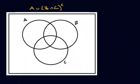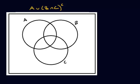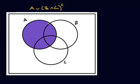Let's go ahead and try another example. We want to shade A union, and then we have B intersect C complement. Let's do it both ways — the shading way first, where you shade everything. So let's do A. If I'm going to shade A, there it is.